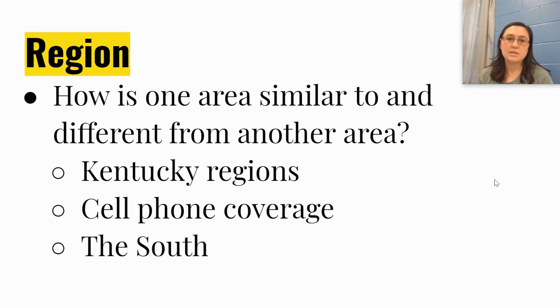We have cell phone coverage regions. Certain places in America, you see those maps all the time on commercials. AT&T is better than, you know, another carrier based on what region you're in. You can divide the country into that. And we talk about the South. We'll talk about that a lot whenever we get to the Civil War. So that was based on economy, manufacturing versus agriculture, things like that, different political beliefs.